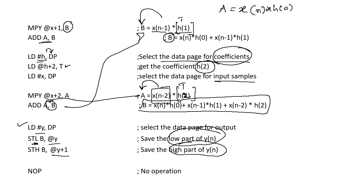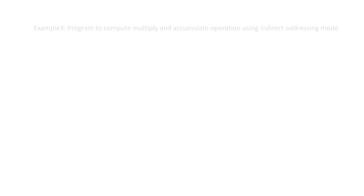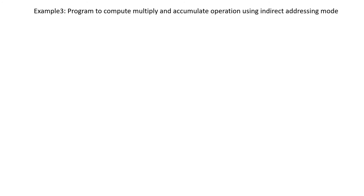Then NOP introduces some delay and the program ends with the directive .end. Now we will analyze the same multiply and accumulate operation using indirect addressing mode.